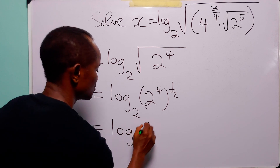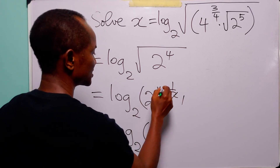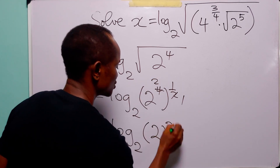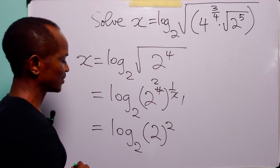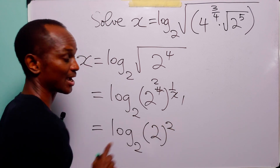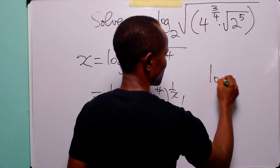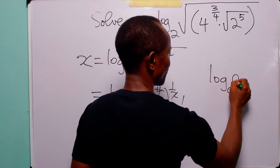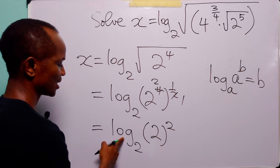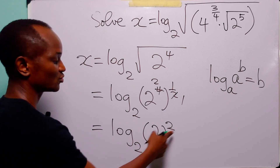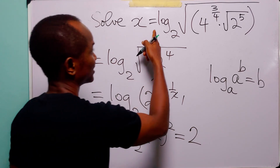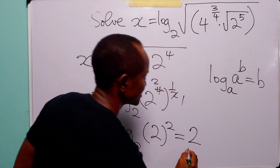When we do that, we get log to base 2 of — 2 goes into itself once and into 4 twice, so 2 times 1 is 2 — basically we have that x is equal to log to base 2 of 2 to the power 2. Let us remember that when we have log to base a of a to the power b, this is simply equal to b. So here we have log to base 2 of 2 to the power 2, which is simply equal to 2.